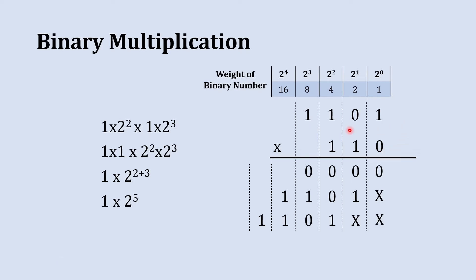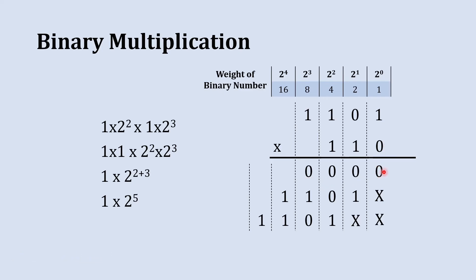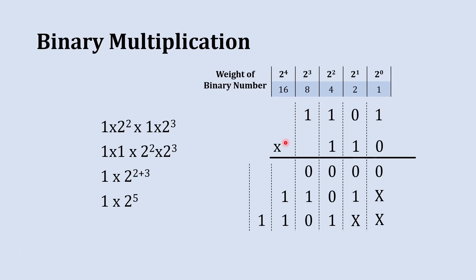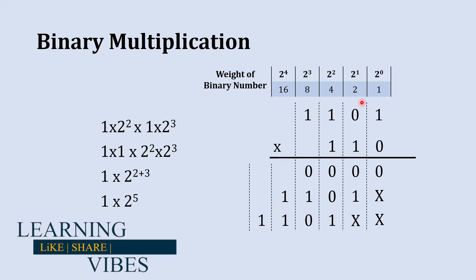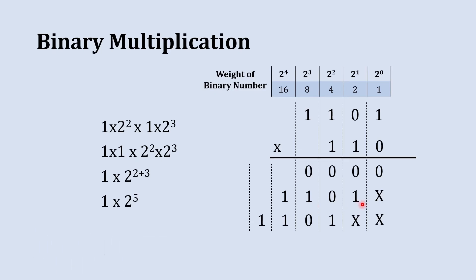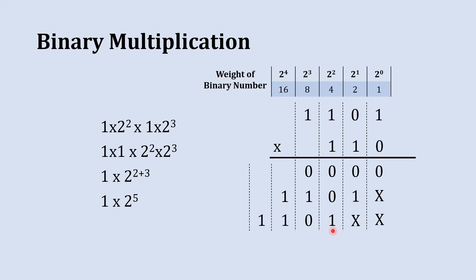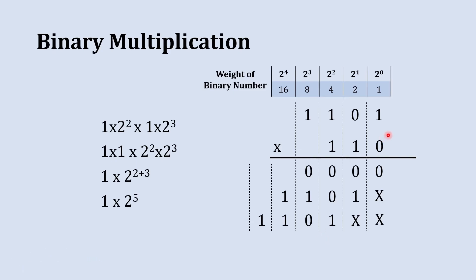When you multiply 0 of the multiplier with the multiplicand, place all zeros — if the number is 4 bits, place four zeros, and the first zero starts at the same place as that multiplier digit. When you multiply 1 of the multiplier with the multiplicand, place the multiplicand as it is (1101), and the place value of its first bit should match the place value of that multiplier digit. This is the short trick to remember, and it is the real reason why each number is shifted by one bit as you move from LSB to MSB.